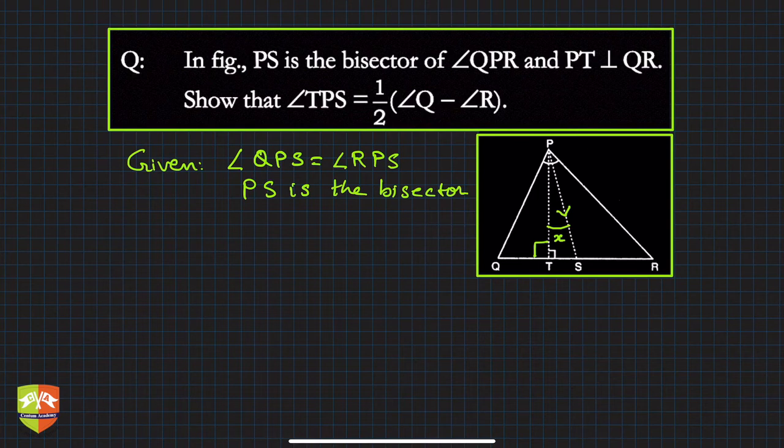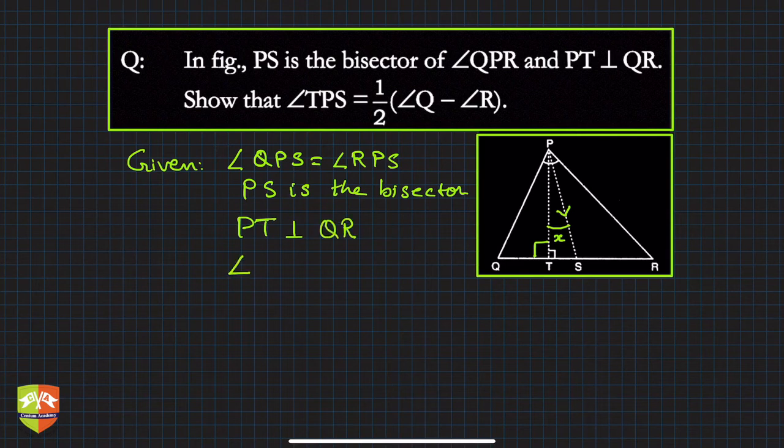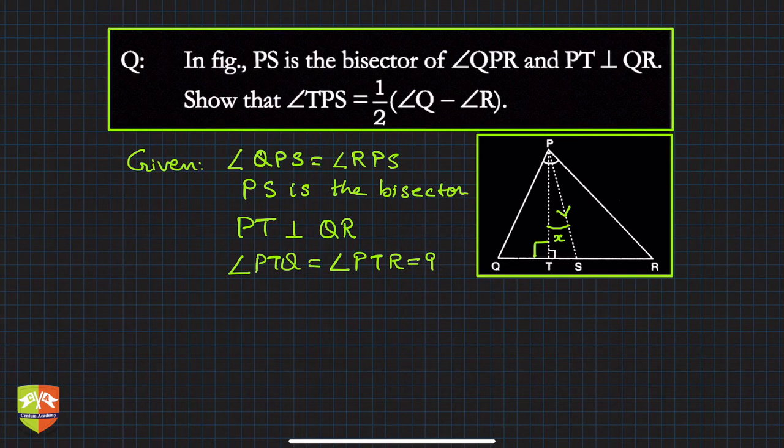So what next? Also PT is perpendicular to QR. That means what? ∠PTQ is equal to ∠PTR = 90 degrees, correct?